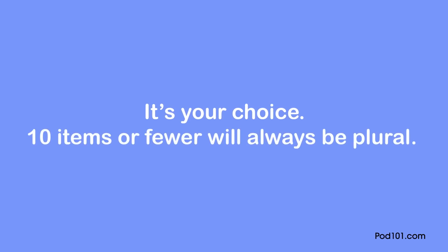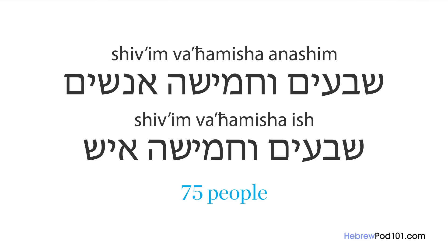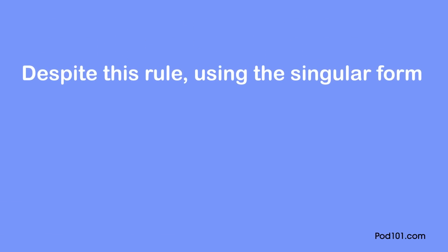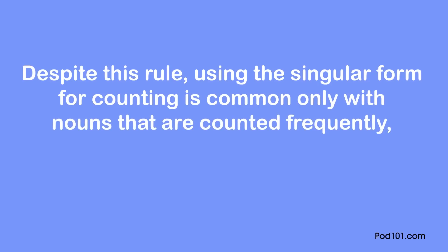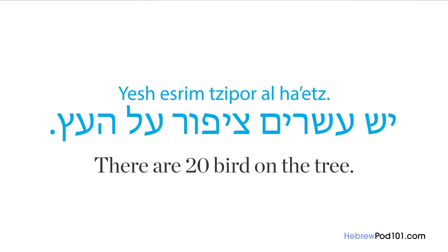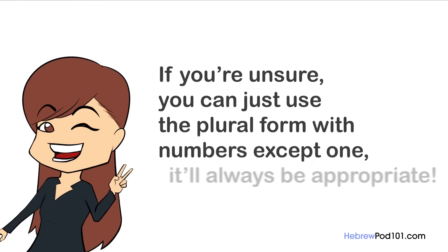For example, 50 shekels could be either 'chamishim shekalim' or 'chamishim shekel,' and 75 people could be either 'shiv'im ve'chamisha anashim' or 'shiv'im ve'chamisha ish.' But 9 years can only be 'tesha shanim' and 5% can only be 'chamisha achutzim.' Using the singular form is common only with frequently counted nouns like money or units of time such as hours, days, and years. If you're unsure, just use the plural form — it will always be appropriate.